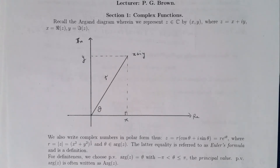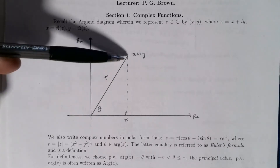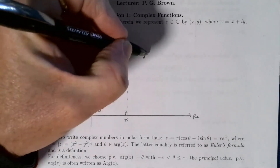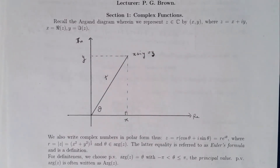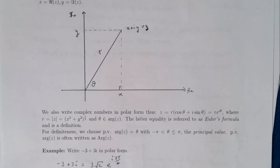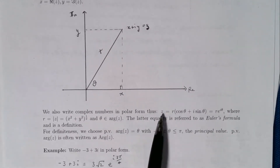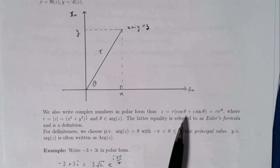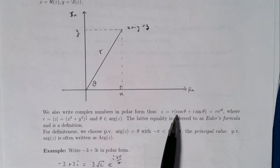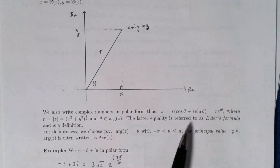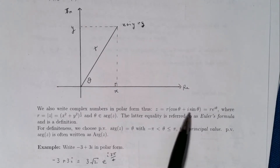We can also represent a complex number in polar form by measuring the distance from the origin the complex number makes, and measuring the angle it makes with the positive real axis. In doing so, x is just r cos θ and y is r sin θ, so we write z as r(cos θ + i sin θ). We then define cos θ + i sin θ to be e^(iθ) — that is Euler's formula, and it is a definition.